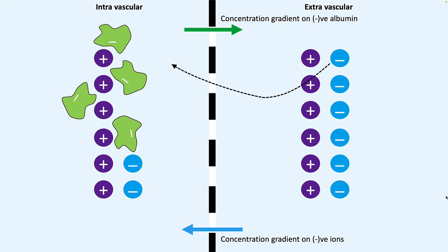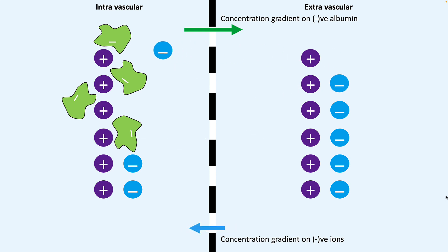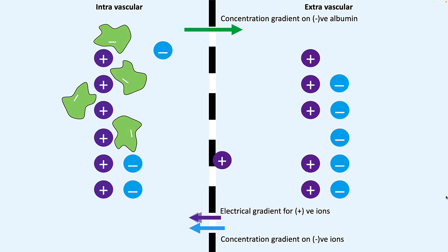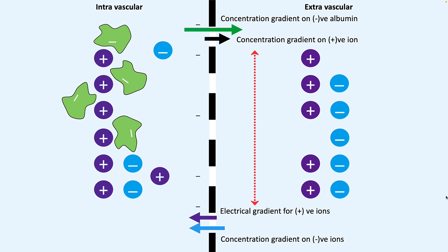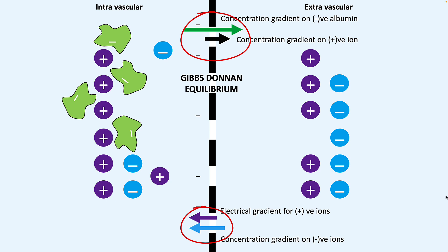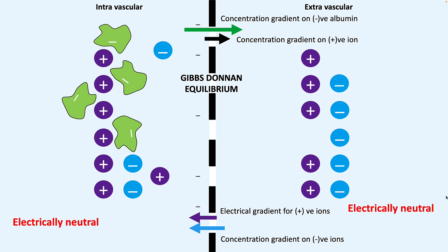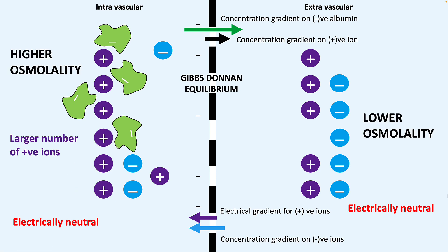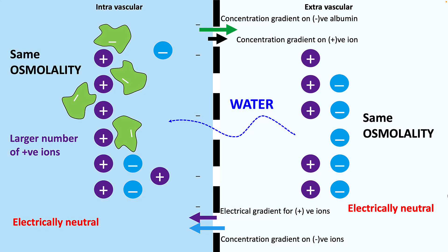Chloride ions can easily pass through the membrane while proteins cannot, so chloride is able to traverse the semi-permeable membrane. However, this is going to generate a negative charge on the intravascular side, which will generate an electric gradient for the positive ions, attracting the positive sodium ions. So your electrical gradient of positive ions decreases while you generate a new concentration gradient for the positive ions. After some time these things balance out, and that is your Gibbs-Donnell equilibrium. At Gibbs-Donnell equilibrium both sides are still electrically neutral, but there are a larger number of positive ions on the left side, and because there is higher osmolality on the left side, water is going to move from right to left to reduce this difference in osmolality.